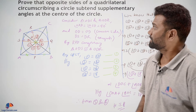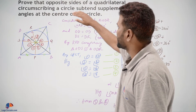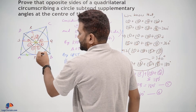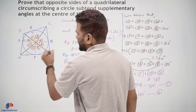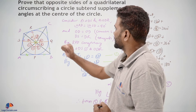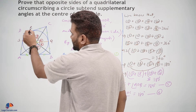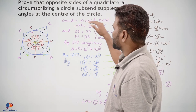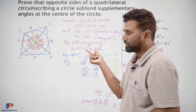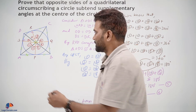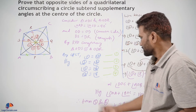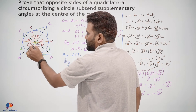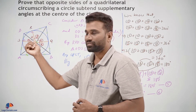Let us repeat once more briefly. We need to prove that opposite sides of a quadrilateral circumscribing a circle subtend supplementary angles at the center, meaning this angle plus this angle equals 180 degrees. For that, we considered triangles DRO and DSO. From these, we got the two triangles are congruent by RHS, and by CPCT, the corresponding angles are equal. Similarly for all other pairs.